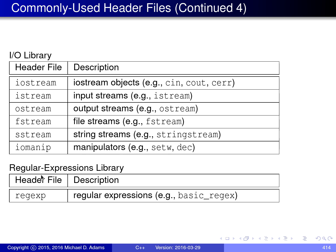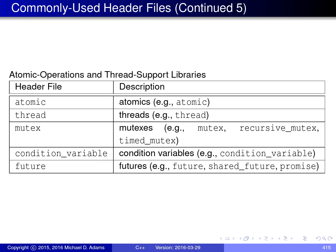In the second table, I've listed the header file associated with the regular expressions portion of the standard library. The header file is called regex, and regular expressions is basically pattern matching functionality for searching for patterns in strings. On the next slide, I've listed some of the header files associated with the atomic operations and thread support portions of the standard library, which are useful if you're doing multi-threaded programming. The atomic header has definitions and declarations for the atomic type, for atomic memory operations. The thread header has definitions related to threads, like the thread type from the standard library. The mutex header defines the mutex type, recursive_mutex type, timed_mutex type, and so on. The condition_variable header has information related to the condition_variable type. And the future header has definitions of the types future, shared_future, promise, and so on.